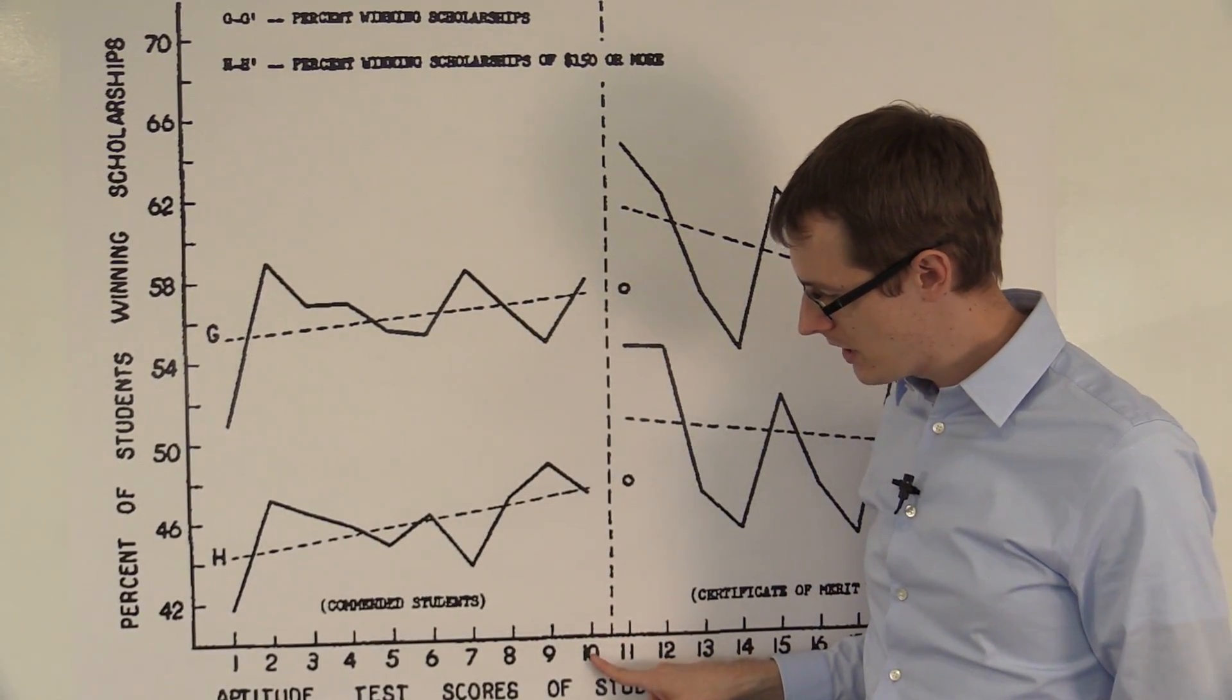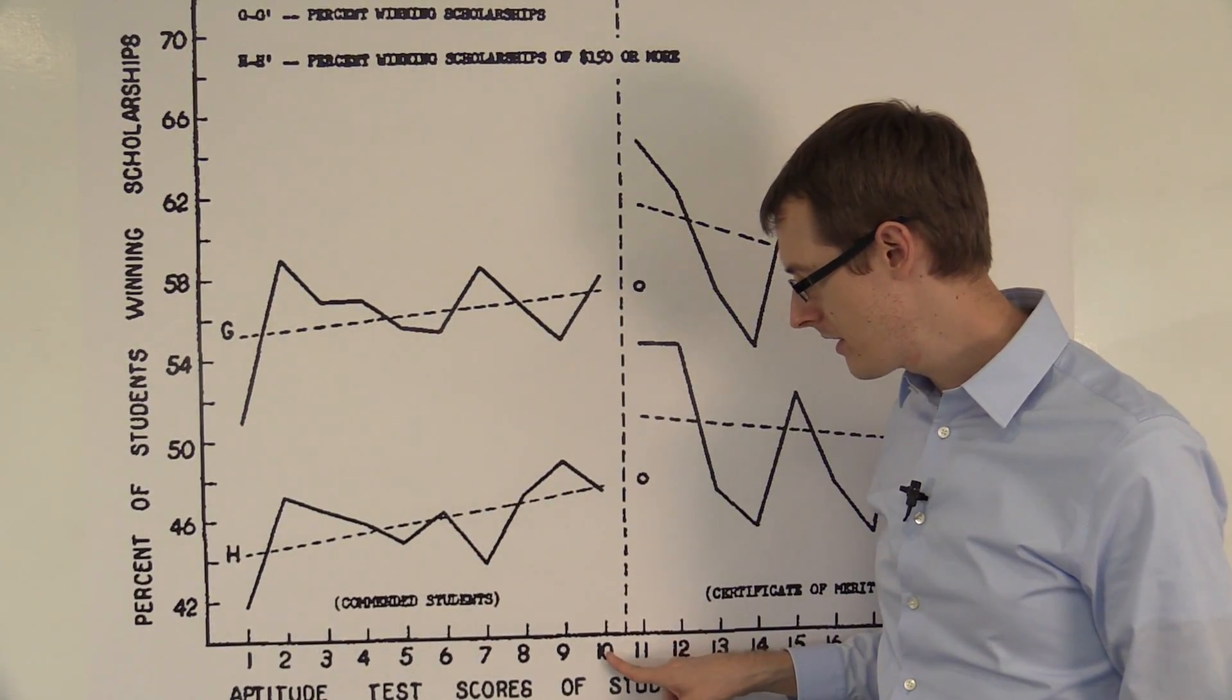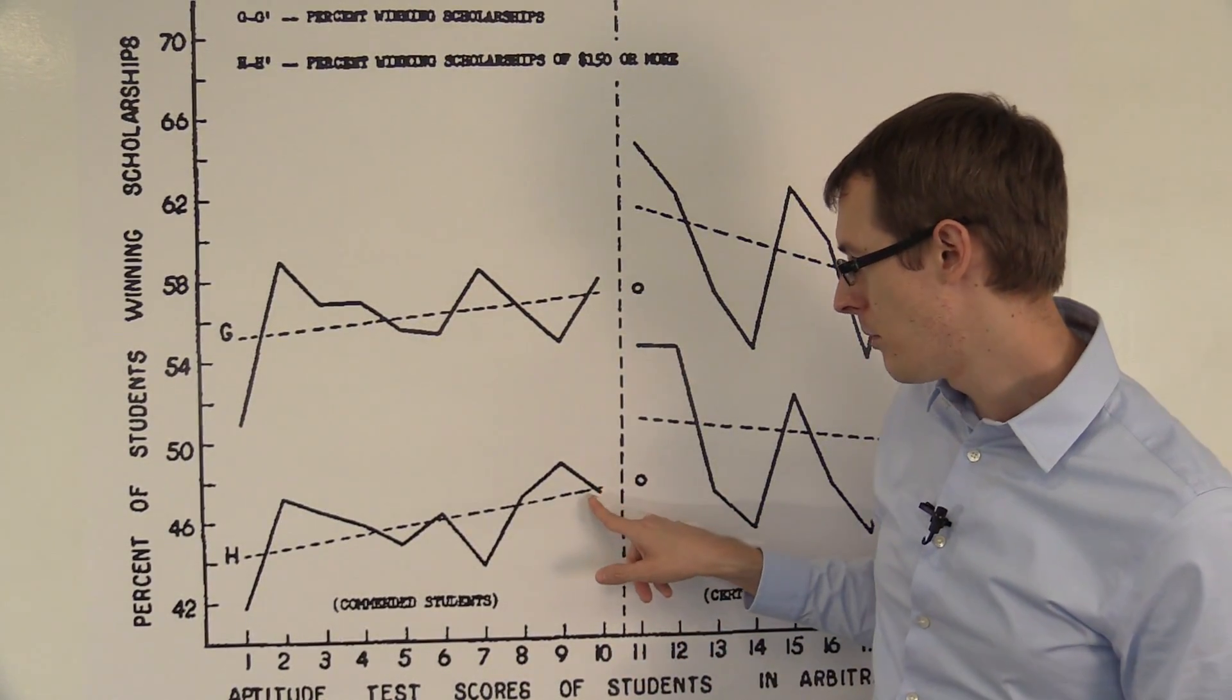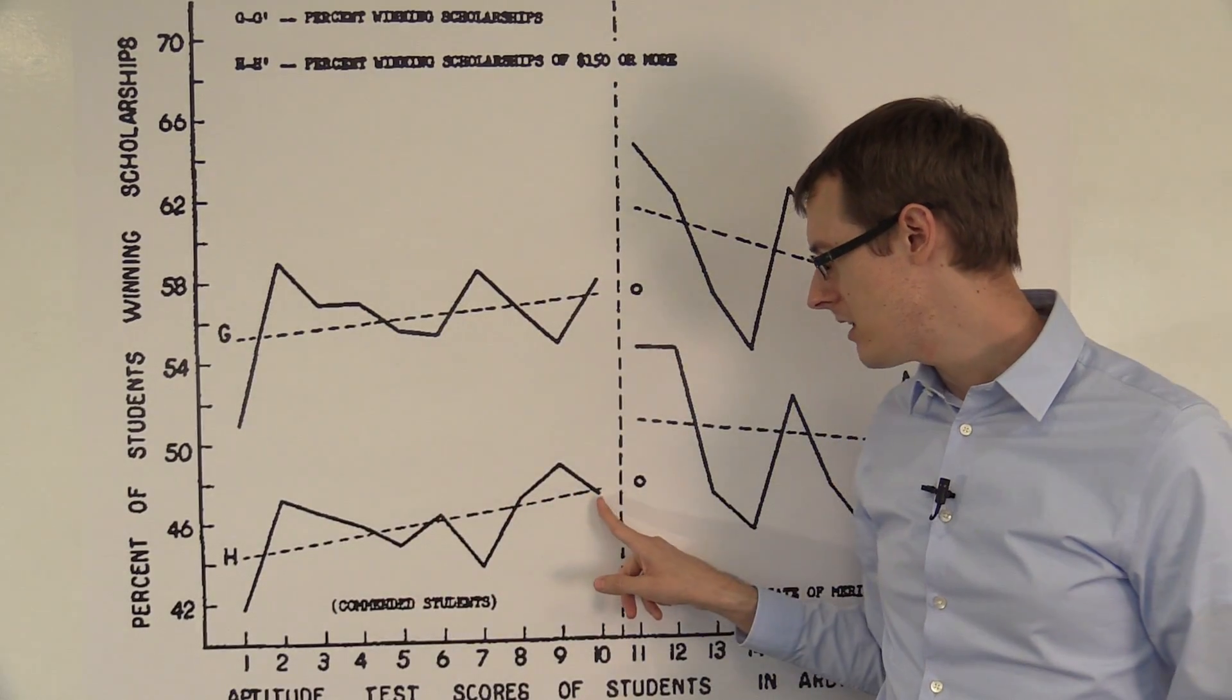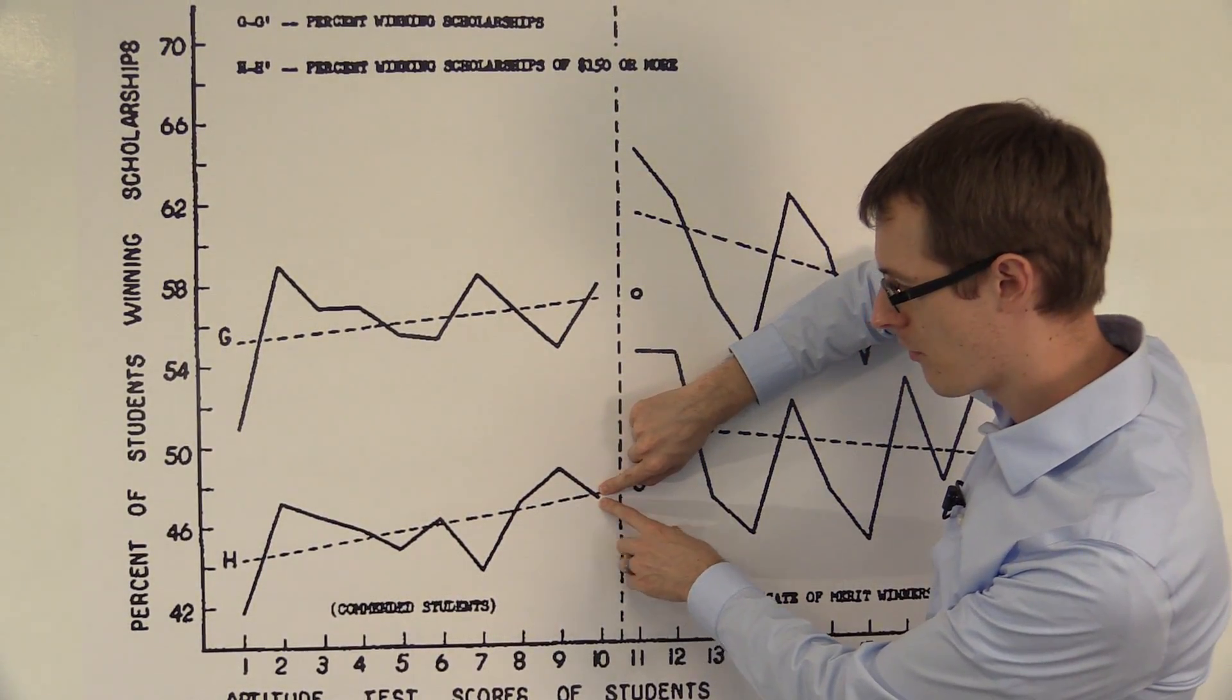Now let's look at the students in the control group, just people who scored a 10. Among those people, the average outcome was about 46. That's this solid line number right here.